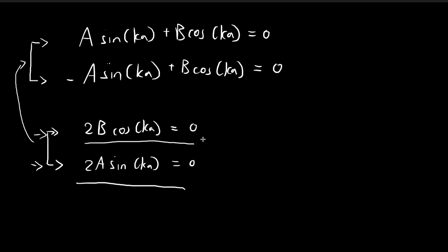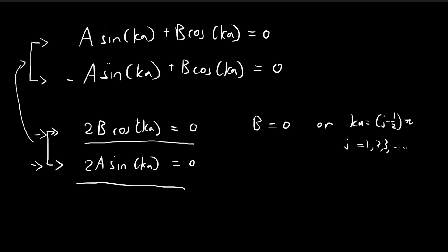For the first requirement, 2B·cos(ka) = 0, there are two possibilities: either B = 0, or ka = (j − 1/2)π where j = 1, 2, 3, and so on. For example, if j = 1, then ka = π/2, and cos(π/2) = 0, satisfying the requirement. Either of these conditions being true is sufficient to satisfy this first statement.